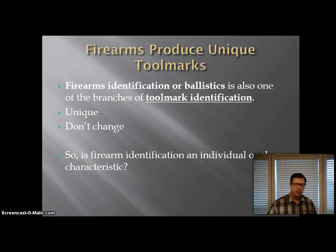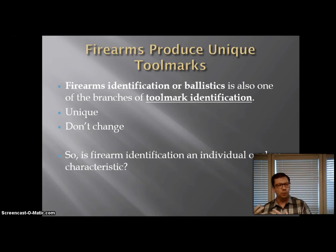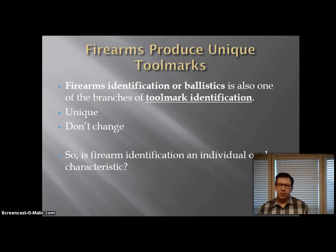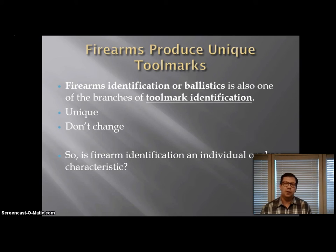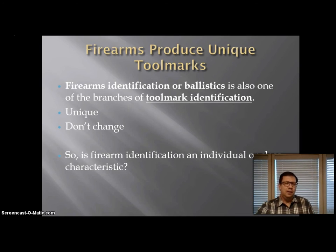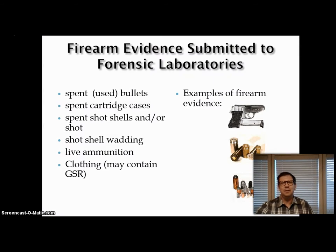Is firearm identification an individual or class characteristic? Is it individual evidence or class evidence? Take a minute to think about that and be careful before you answer. Firearm identification or ballistics is typically known as individual evidence if there are striations on the bullet that can identify a specific gun it came from. The problem with that is we don't always know who fired the gun. Just because we know that a gun is the exact one used in a crime and that gun is found in someone's house, that doesn't mean we know who fired the gun. That taken into account, it's still known as individual evidence.